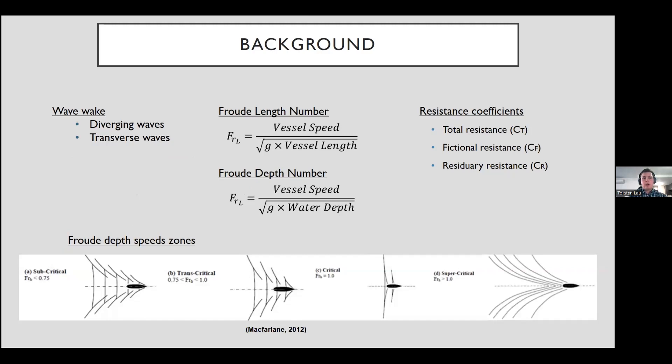I'll just give a little bit of background on a few things. As I mentioned in the last slide, two primary wave types: diverging and transverse. We also used the Froude length number and Froude depth number to help non-dimensionalize all the data recorded. In the image on the bottom there, you can see the Froude depth speed zones that we did our testing across: subcritical, transcritical, critical and supercritical. You can see that there's a change in the wave wake pattern across those four speed zones. For this research, the main area of interest was in that transcritical zone from 0.75 to 1.